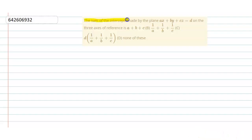The sum of the intercepts made by the plane Ax plus By plus Cz equals D on three axes of reference is: option A) A plus B plus C, option B) 1 by A plus 1 by B plus 1 by C, option C) D into (1 by A plus 1 by B plus 1 by C), and option D) none of this.